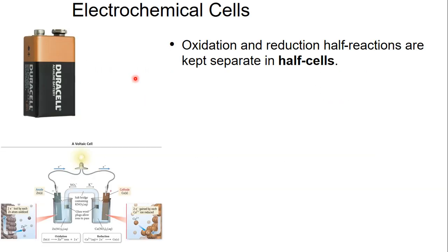So for our electrochemical cells or batteries, we keep our oxidation — which is losing electrons — and our reduction — which is gaining electrons — in separate cells. Here's an example of a primitive battery. We have our anode right here, which is losing electrons and oxidizing, and our cathode right here, which is gaining electrons.